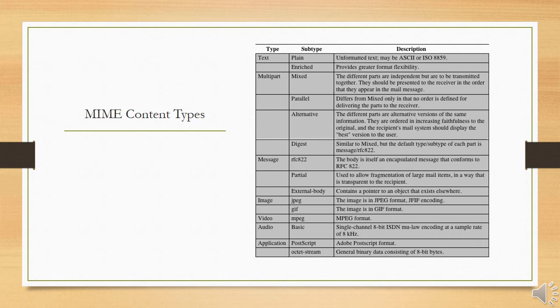The message external body subtype indicates that the actual data to be conveyed in this message are not contained in the body. Instead, the body contains the information needed to access the data. As with the other message types, the message external body subtype has an outer header and an encapsulated message with its own header.